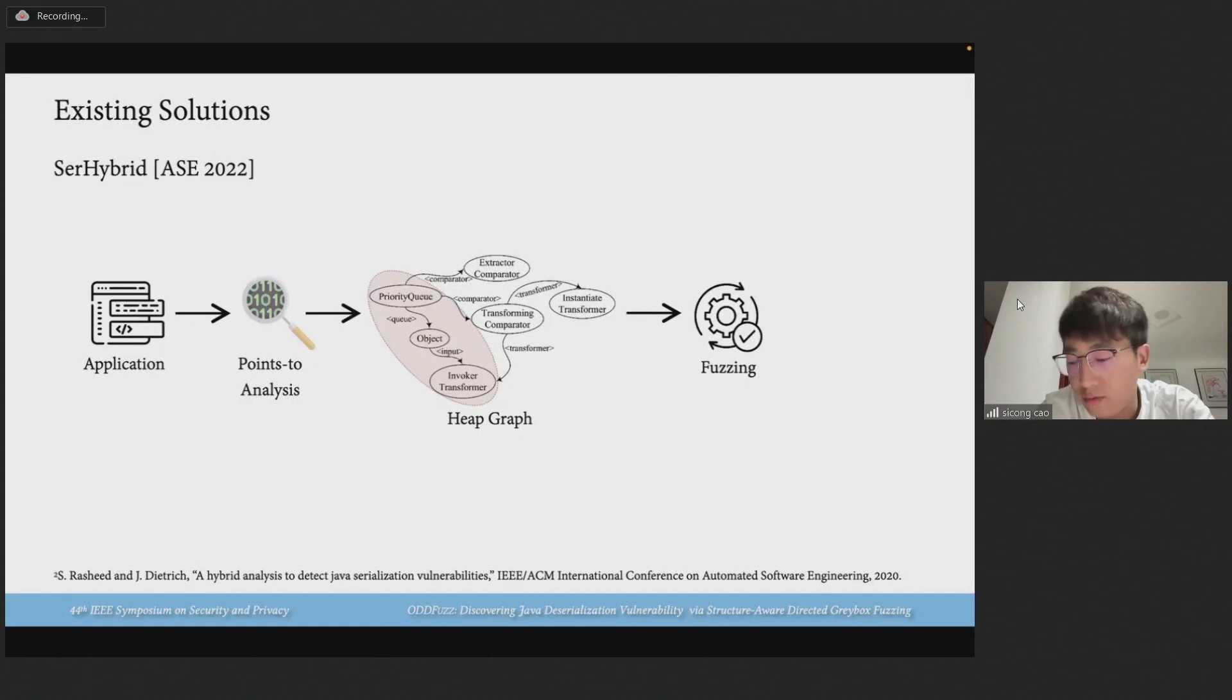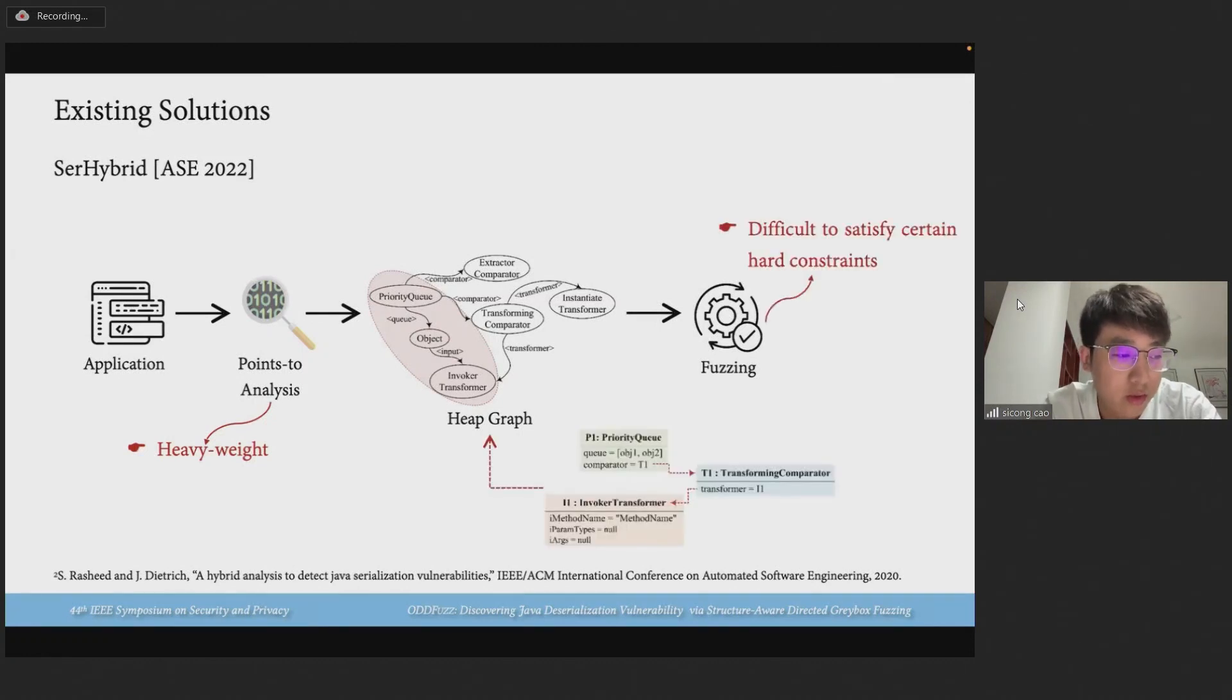Another approach is SerialHybrid, proposed at ASC 2022. It employs points-to analysis to construct heap access paths from source objects to sink objects and authorizes fuzzing to generate actual injection objects for verification. However, its heavyweight points-to analysis may not be applicable to large applications. In addition, injection objects may have a multi-level class hierarchy. Finding solutions without prior knowledge about such complex nested structure with certain control or dataflow constraints is ineffective.